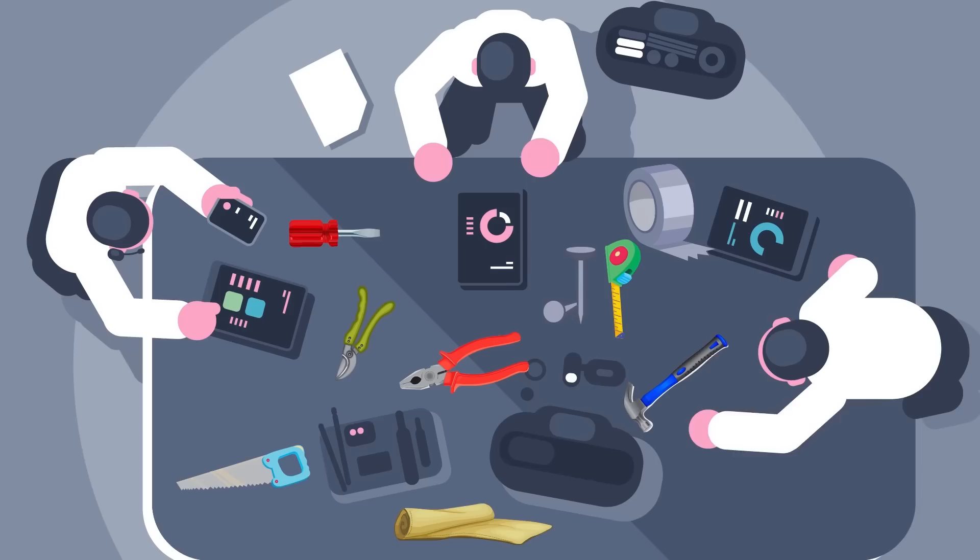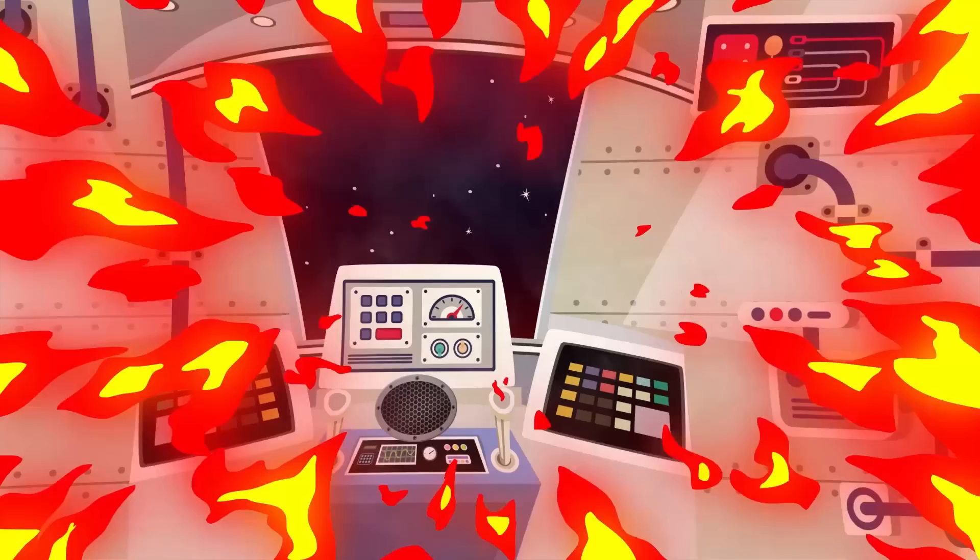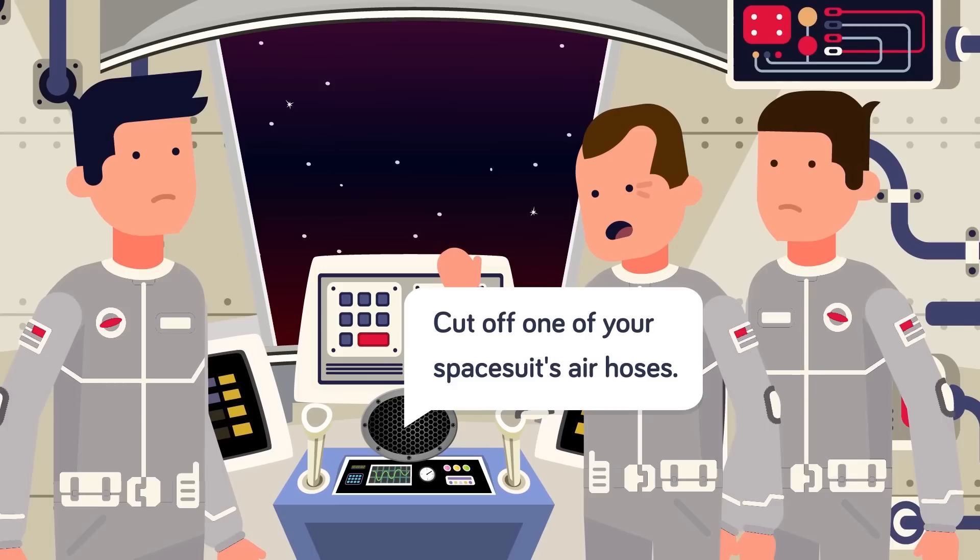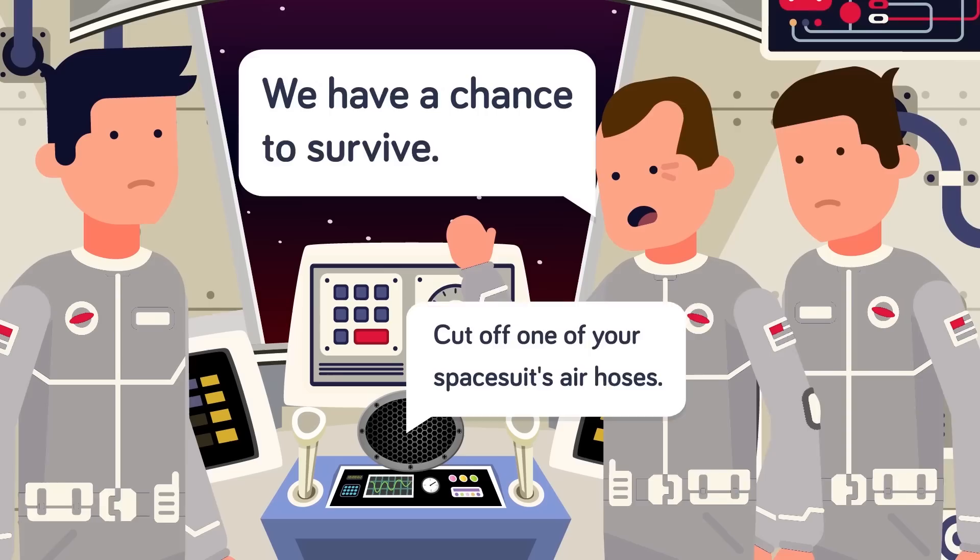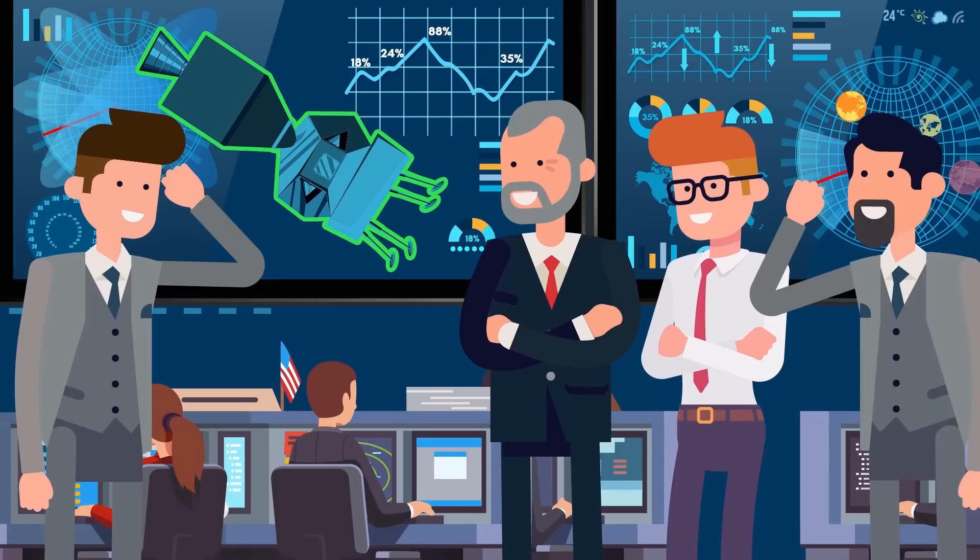Inside mission control, NASA engineers furiously work at solutions to the lithium hydroxide problem, gathering together a store of all materials available to the astronauts themselves. With just hours of clean air left, an ingenious solution is found. The crew is ordered to cut off one of their spacesuit's air hoses using tape, velcro, and other odds and ends. Fashion it into an adapter for the cube-shaped lithium hydroxide canisters from the command module. Much to everyone's relief, the improvised solution works brilliantly, and at last the crew of Apollo 13 sees some real hope of returning to Earth safely.